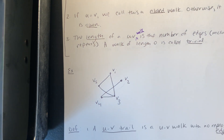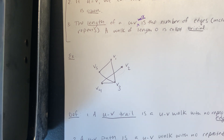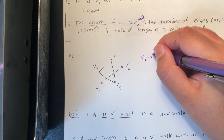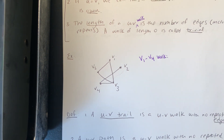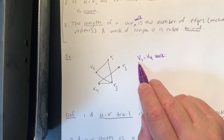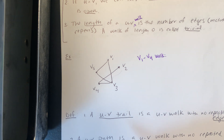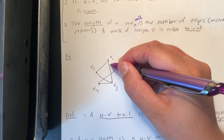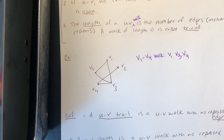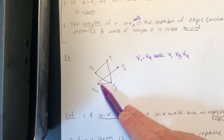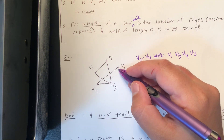Let's look at an example. Here's a graph with vertices v1 through v5 and five edges. An example of a v1-to-v4 walk: start at v1, go to v3, then to v4. But let's make it longer — continue to v2, then back to v4 again.